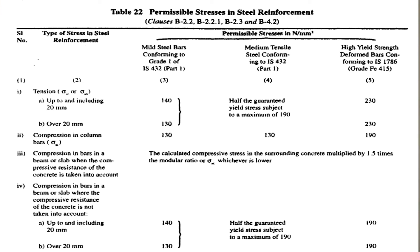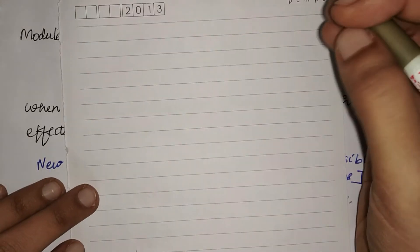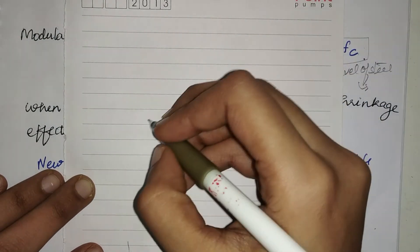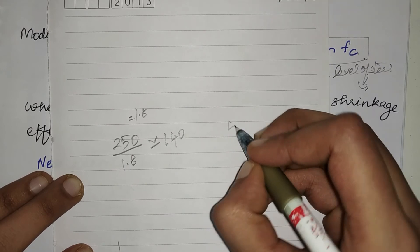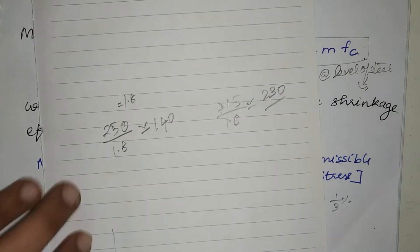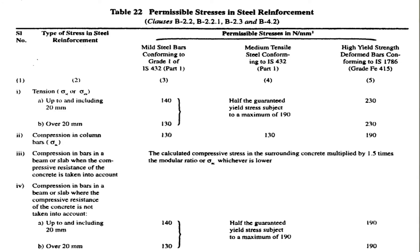The next table gives permissible stresses for steel reinforcement. There are two main divisions: mild steel bars and high yield strength deformed (HYSD) bars. For tension in bars up to and including 20mm, mild steel has a permissible stress of 140 MPa and HYSD bars have 230 MPa. These values come from dividing the characteristic strengths by the factor of safety of 1.8: 250÷1.8 ≈ 140, and 415÷1.8 ≈ 230. For bars over 20mm, mild steel reduces to 130 MPa while HYSD remains at 230 MPa.